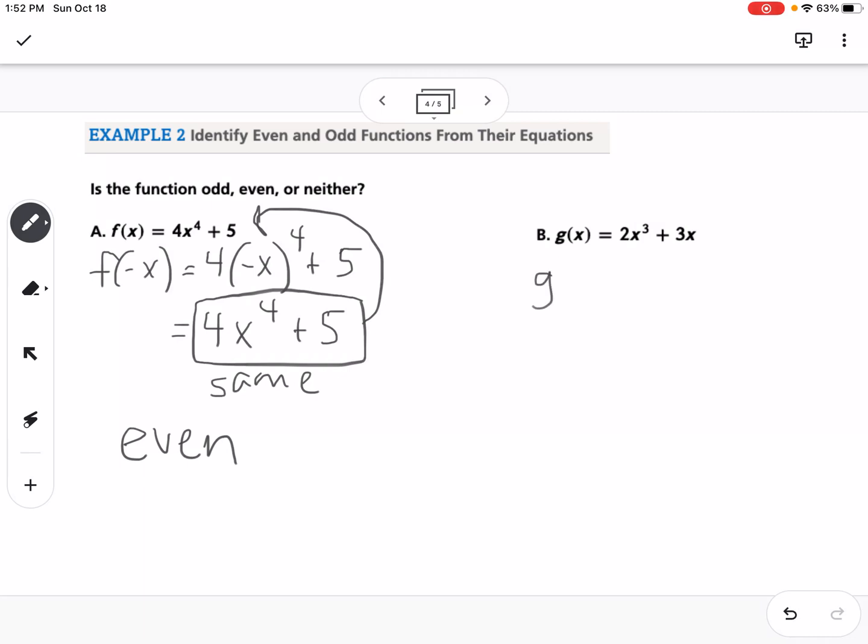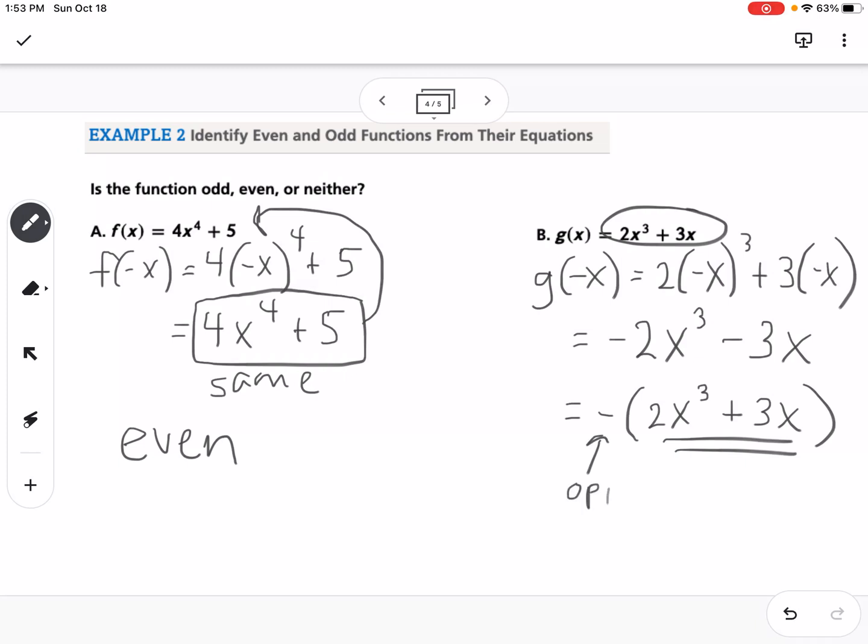Now we're going to try the same thing for b. So g(-x) equals 2 times (-x) to the third power plus 3 times (-x). We know that if we take a negative number to an odd power like 3, it's going to stay negative. So this would turn into -2x³ - 3x. Now that is not the same as the original, so we know it's not even. So then my next step is I factor out a negative. So this would become -(2x³ + 3x). So you see how this inside the parentheses is the same as the original. So this is opposites. So these two functions are opposites. So it's the negative version of your original, so that means that this is odd.